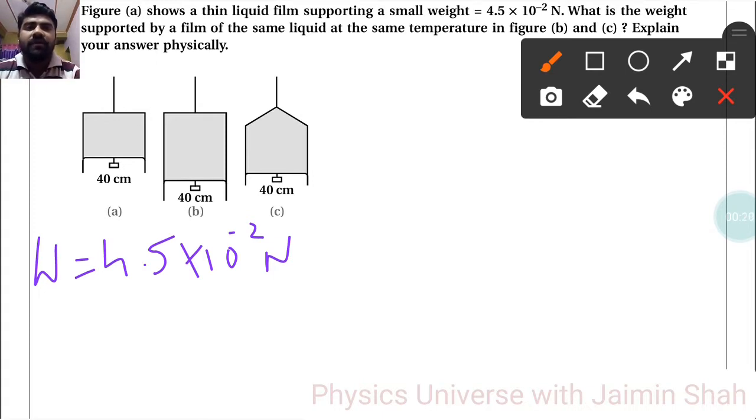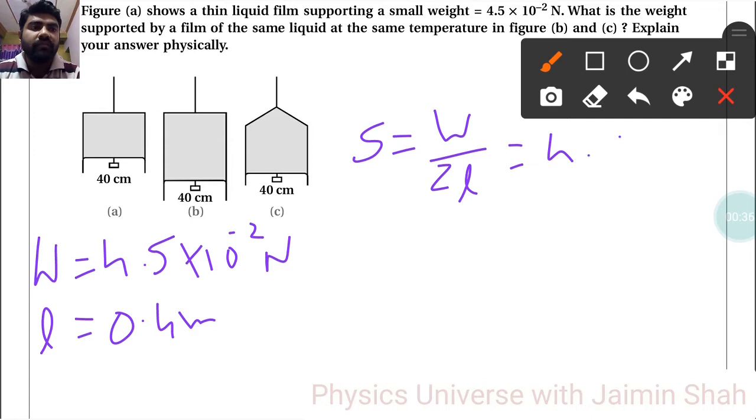Explain your answer physically. Here, the length L is equal to 40 centimeters for all, so 0.4 meters. So S = W/2L = 4.5 × 10^-2 / (2 × 0.4).